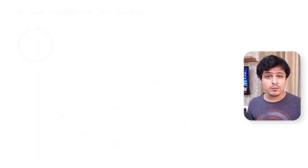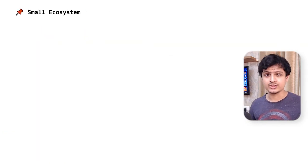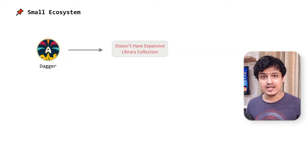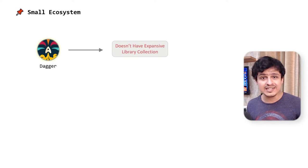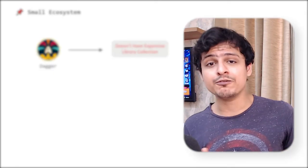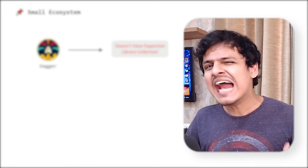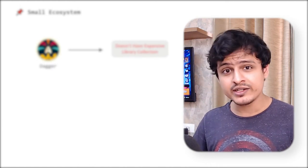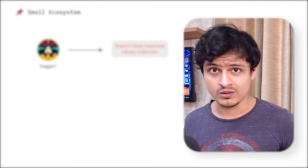The next problem with Dagger is due to its young age. To qualify as a proper dev kit, you need an expansive library collection. Dagger still hasn't reached the maturity level of something like Jenkins or Java. But it's just a matter of time before it gets there. And given how easy it is to make Dagger libraries, it wouldn't take that long.